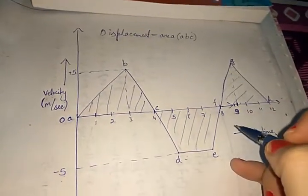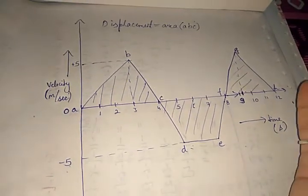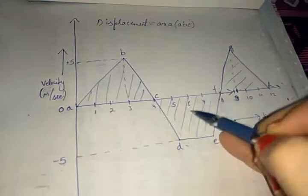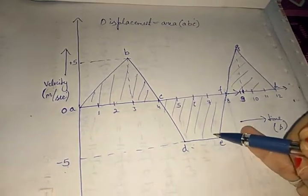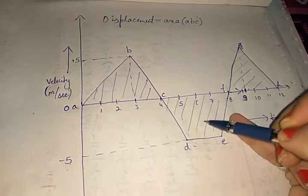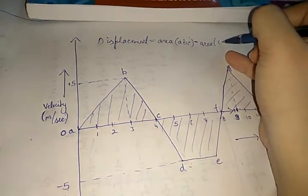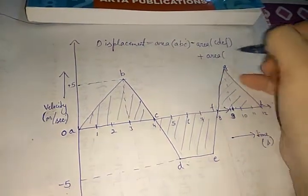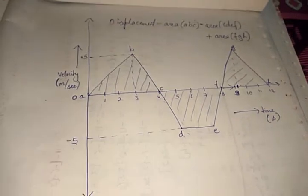To find displacement we must use vector addition, meaning we take signs into account. The first triangle is in the positive direction, so its area is positive. The trapezium lies below the time axis, so it is in the negative direction — we take its area with a negative sign: minus area of CDEF. The last triangle FGH is in the positive direction, so we add its area positively.